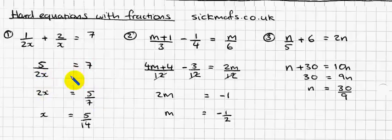So that 7 went down there. That 2x went up there. You've got 5 over 7 equals 2x. And then I further swapped it round. So I've got 2x on this side.